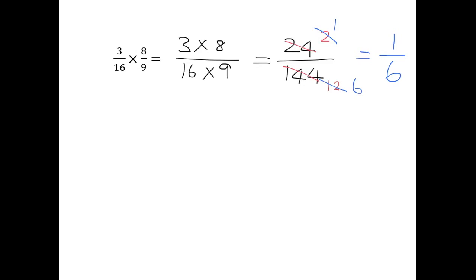That's completely fine — multiply top, multiply bottom, get your answer, and then simplify. But if you're a little smarter with how you do things, you can save yourself from having to do such large multiplications and simplifications.